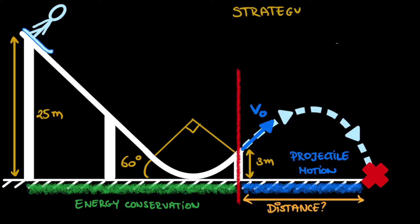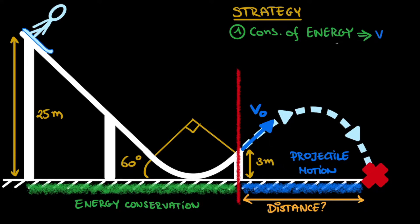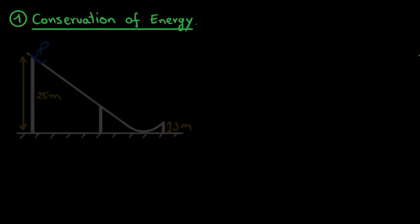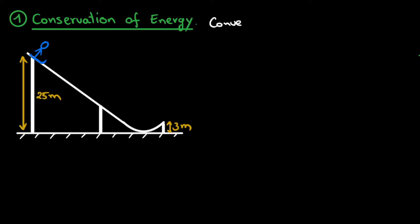This defines the strategy for solving this exercise. First, we will apply conservation of energy to the ski jumper sliding down the ramp to find the velocity she has when she leaves the ramp and gets catapulted into the air. Then in the second part, we will use this velocity as the initial velocity of projectile motion to calculate where exactly she will reach the ground. So let's dive right into that, focusing first on conservation of energy.